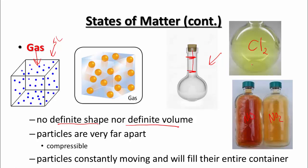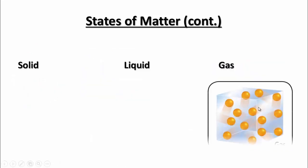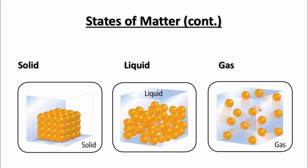Gases can have color, believe it or not. Here are your three states of matter — solid, liquid, and gas — comparing them all together. Solid has fixed volume and fixed shape. Liquid has a fixed volume but takes the shape of the container. Gases don't have a fixed volume or shape — they take the shape and volume of their container. Solid particles vibrate in fixed positions. Liquid particles can flow past each other but stay at the bottom of the container due to gravity. Gas particles are constantly moving in a straight line and fill the entire container.